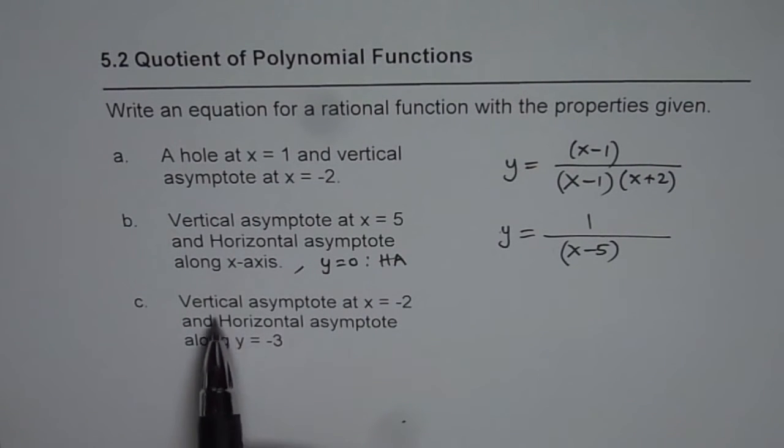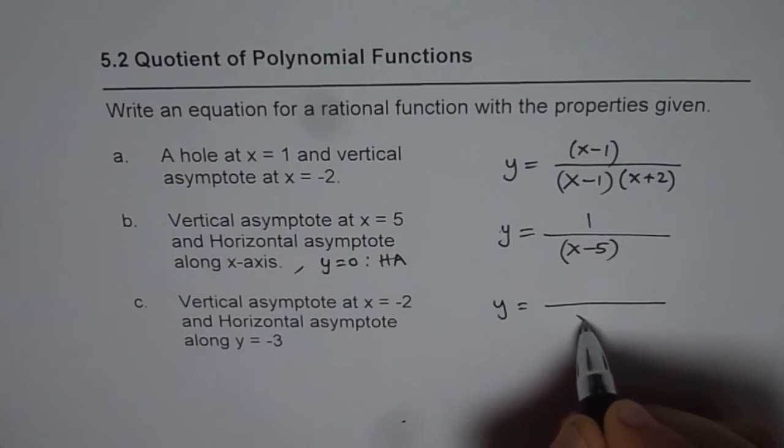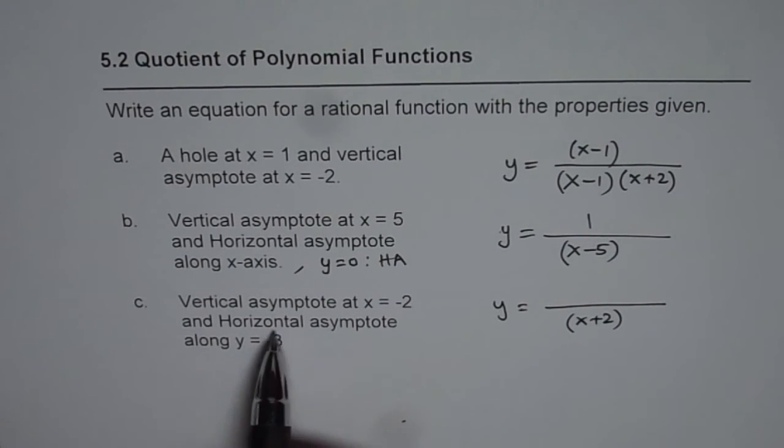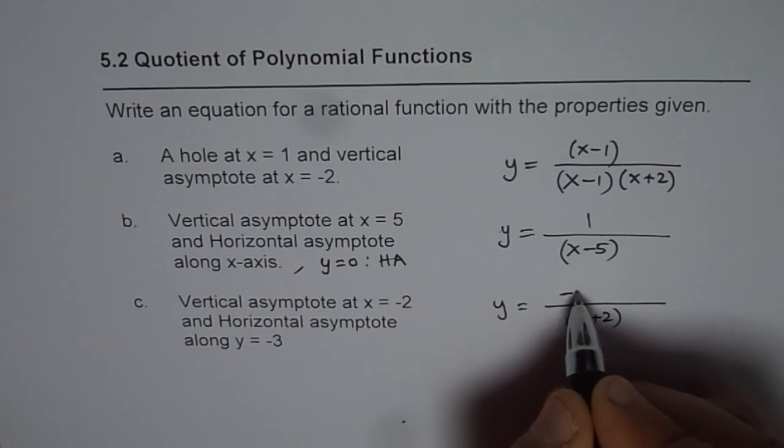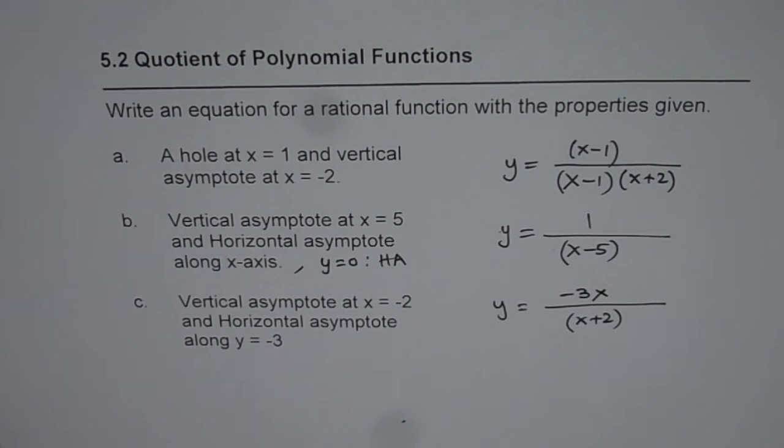Next one is vertical asymptote at x equals minus 2. So, in that case x plus 2 is the factor in the denominator. Horizontal asymptote along y equals minus 3. That means the ratio is minus 3 over 1 and the degree should be same. So, I should write x here. Do you get the point?